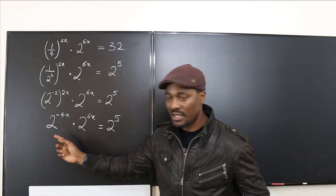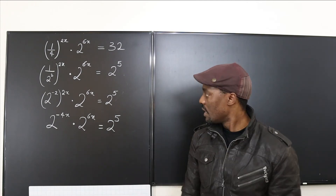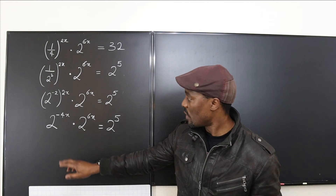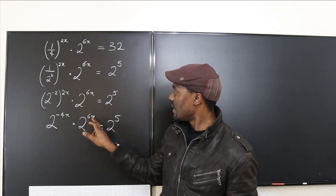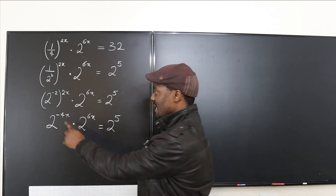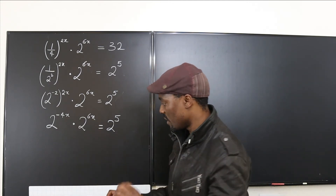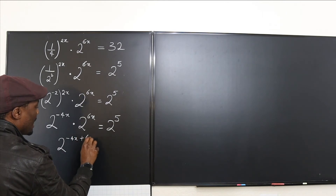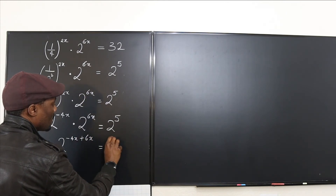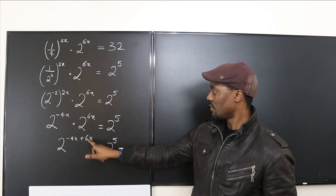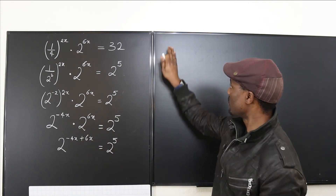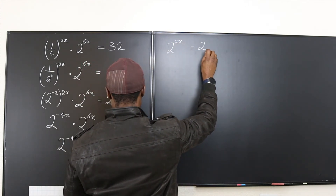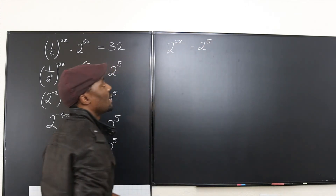At this stage, everything is expressed in base 2. Now we apply the law that says when multiplying two terms with the same base, you add the exponents. So we add negative 4x and 6x: 2 to the power of negative 4x plus 6x equals 2 to the 5th. Negative 4x plus 6x equals 2x, so we get 2 to the 2x equals 2 to the 5th.